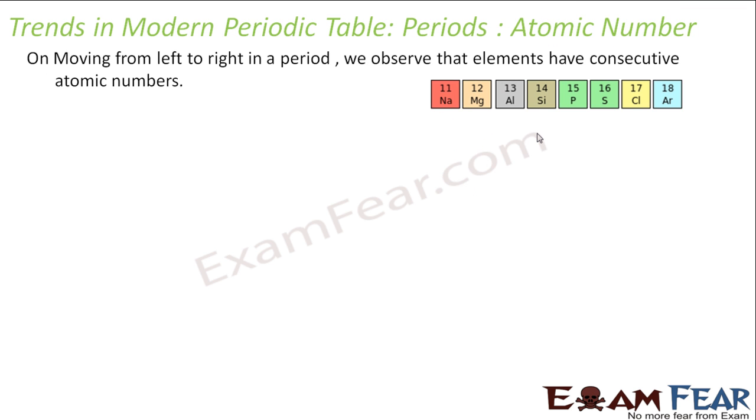If you talk about atomic number, we observe that when the elements have consecutive atomic number, there's 11, this guy is 12, 13, 14, 15, 16, the list increases. So, they have consecutive atomic numbers.